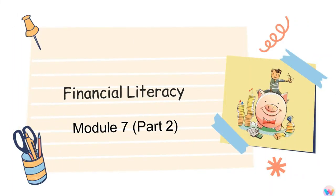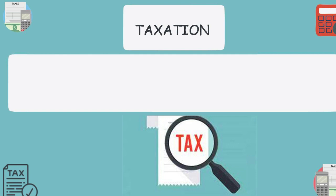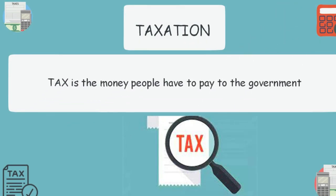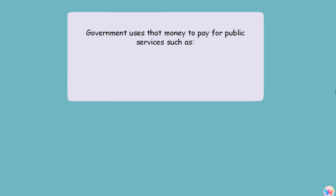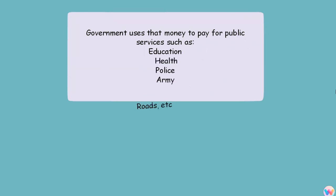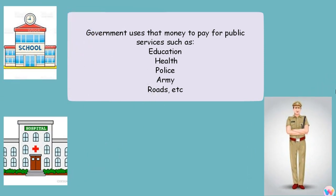Welcome back. In this module, we will look at a very important aspect related to finances: Taxation. Tax is the money that people have to pay to the government, and the government uses that money to pay for public services such as education, health, police, army, roads, and so on. It is therefore a source of income for the government.